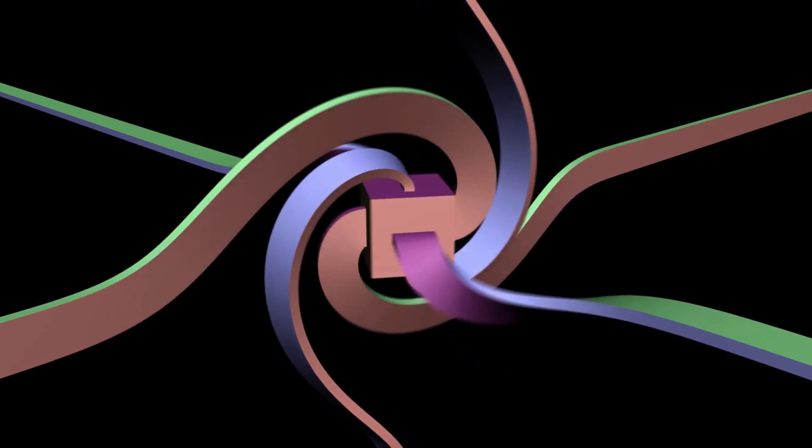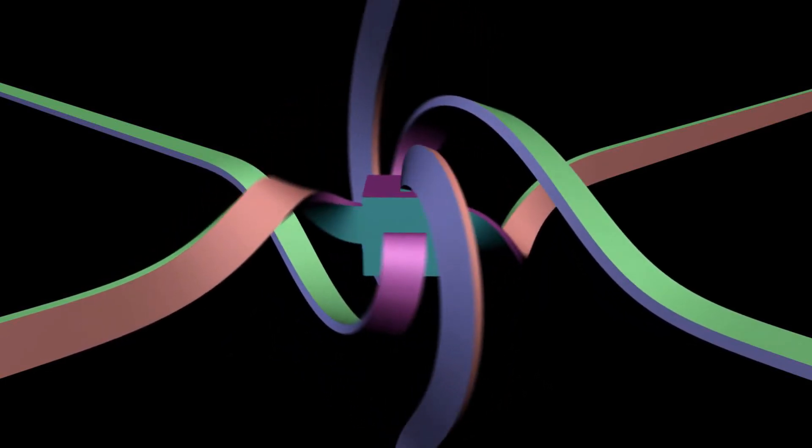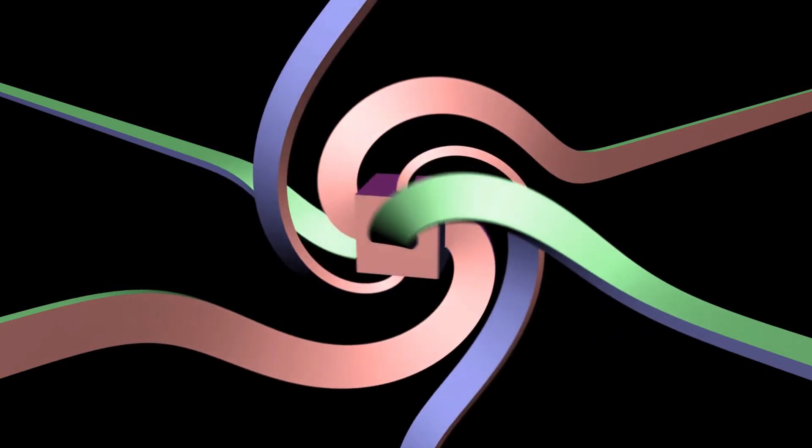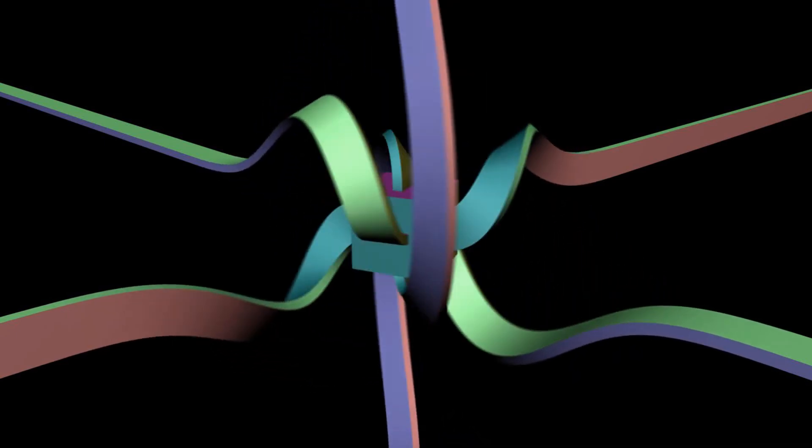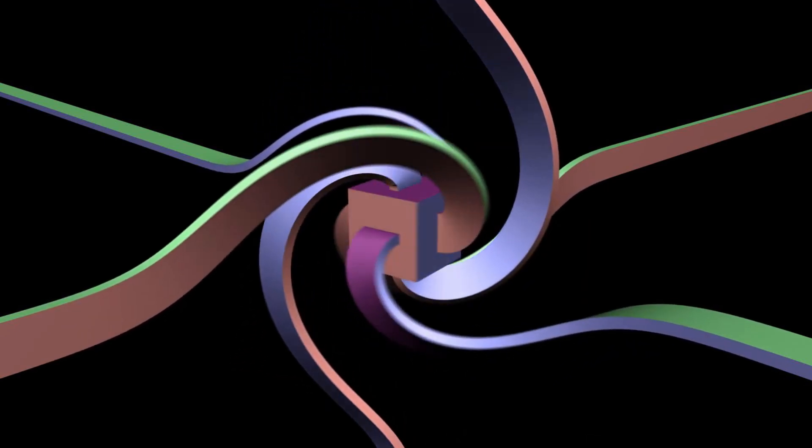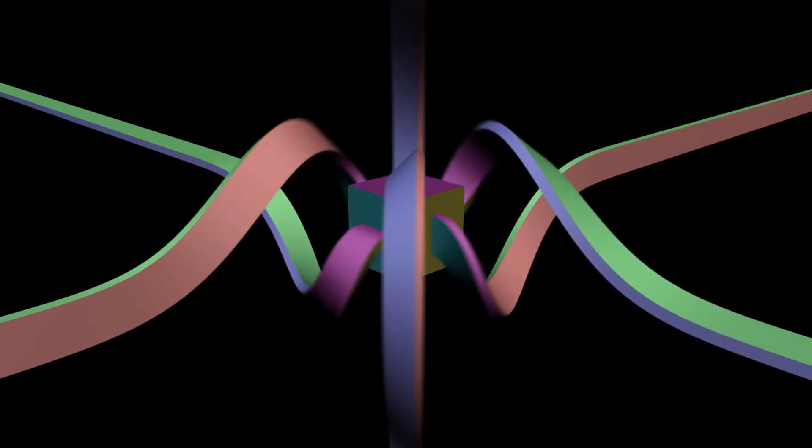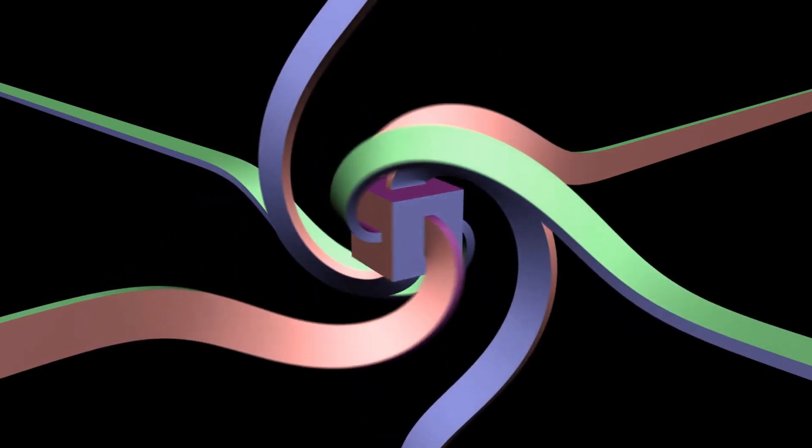But without that, you wouldn't have the Pauli exclusion principle. You wouldn't have the stability of matter. So this spinner is one of the coolest, most important objects anywhere, and it was discovered to be important in physics by a guy named Paul Dirac.